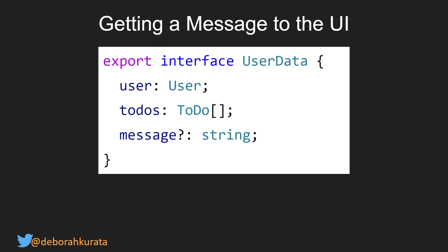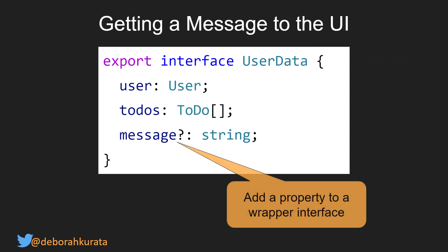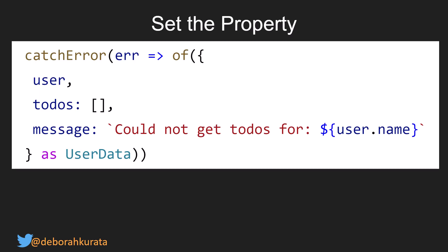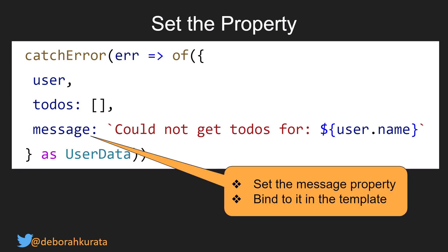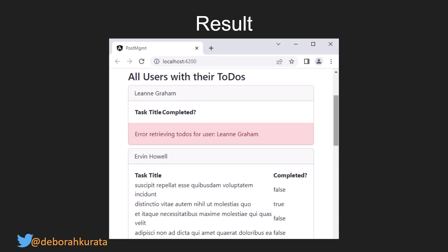One option for getting a message to the UI is to add a property to our interface. Our UserData was comprised of the user and their to-dos — we can also add a message property to hold our error message. In our catchError, we return an observable with the user, the empty array of to-dos, and a message. We can then bind to that message in the template. Here's the result: we couldn't get the to-dos for Leanne, so we see a message, but it continues and gets all the other users.